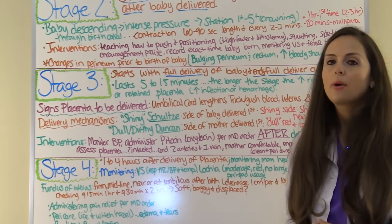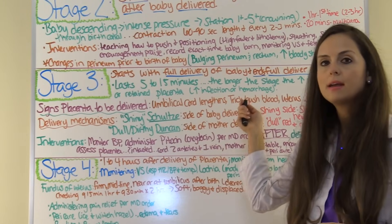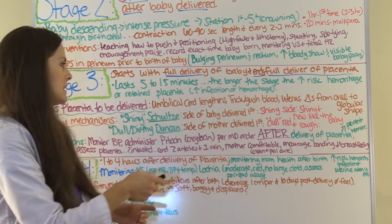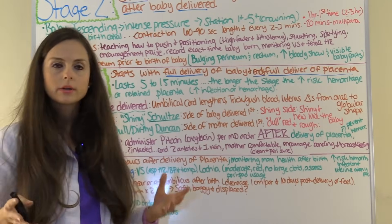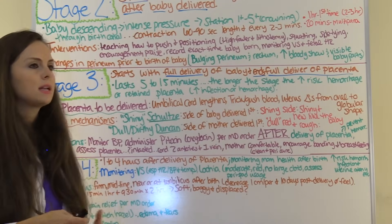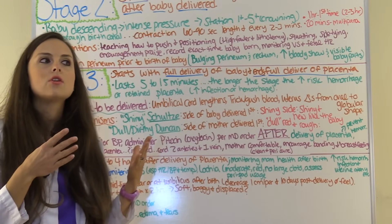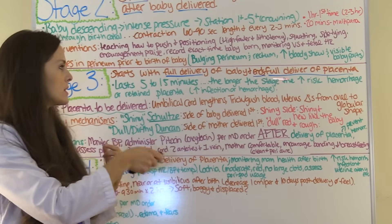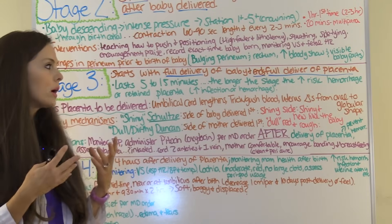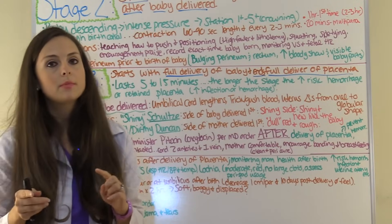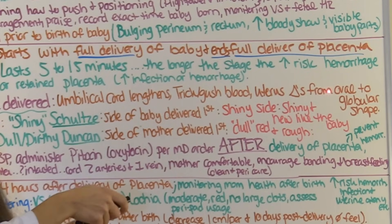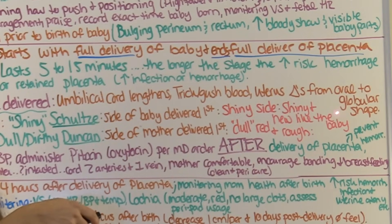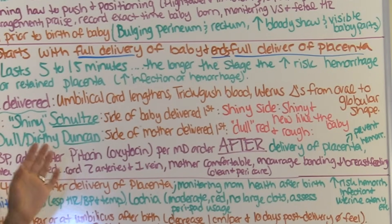Stage three starts with the full delivery of the baby and ends with the full delivery of the placenta. This stage is relatively short and easy — it lasts about five to 15 minutes. We want it to be quick, because the longer it takes, the greater the risk of hemorrhage or retained placenta parts, which can cause hemorrhage or infection. Signs that the placenta is about to be delivered include the umbilical cord starting to lengthen, a trickle or gush of blood, and the uterus changing shape from oval to globular.